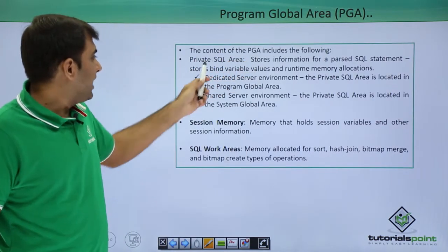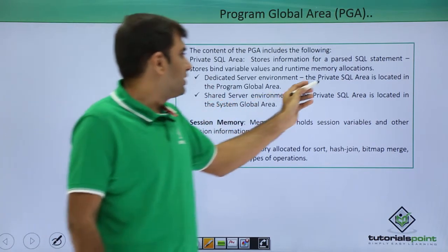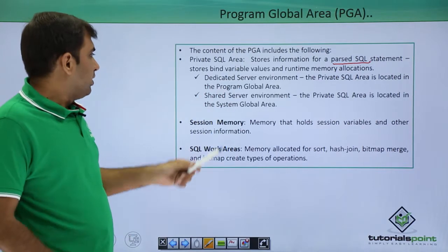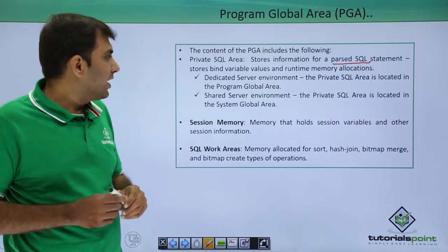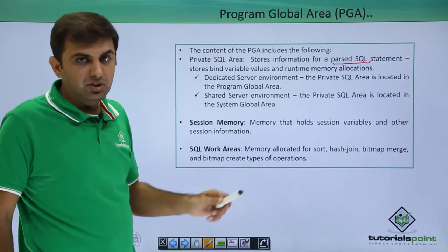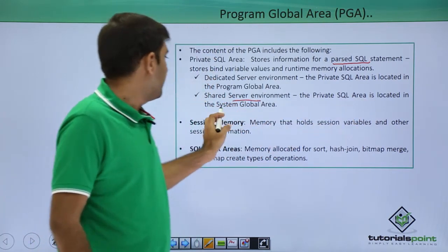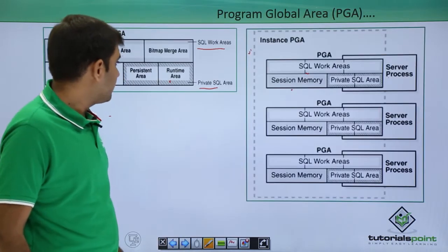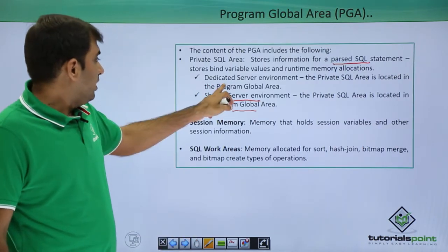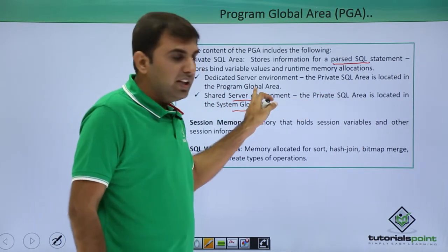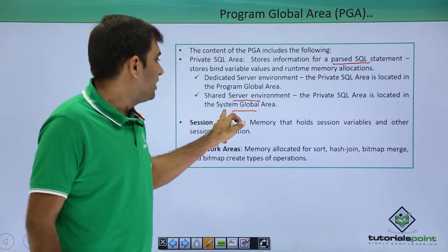The content of the PGA includes the private SQL area, which stores the parsed SQL statement — so parsing is done under the private SQL area. It also stores bind variables and run time memory allocations. Under the dedicated server environment, the private SQL area is located under the PGA. But if your database is configured under the shared server environment, then the private SQL area is located in the SGA.